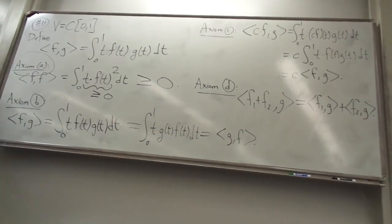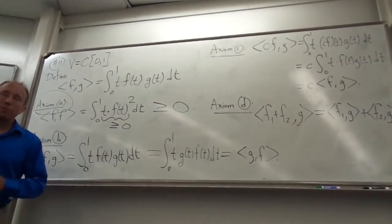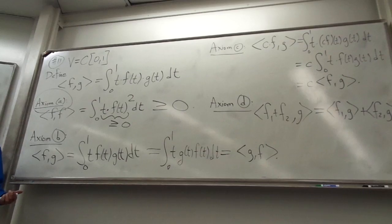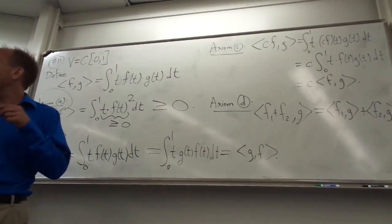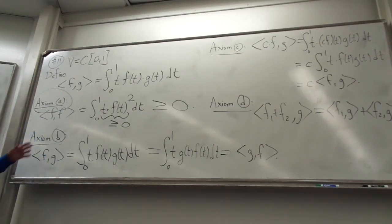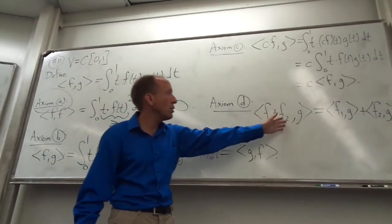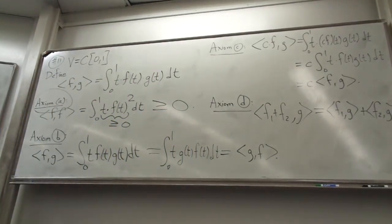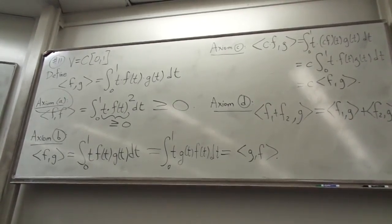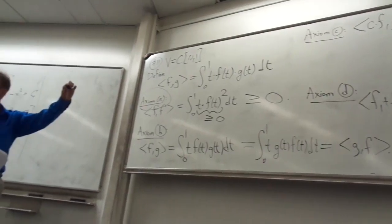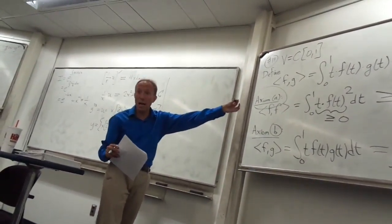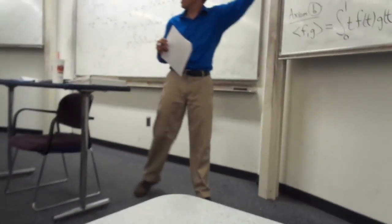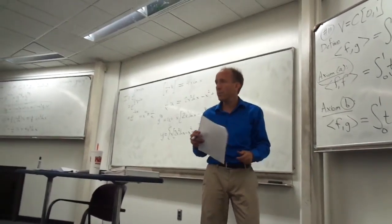I remember when we were going over this, you said there's one that if anyone's going to fail it's usually this one. It's axiom A. Did you mention that if axiom A holds, there's a very big likelihood that the rest should hold as well? Right — if you check axiom A and it works, usually the rest of the axioms also work. It's usually axiom A that is the hangup with these properties. So all of these axioms — I won't even bother to check the last one here — this just says integration respects addition, which it does.